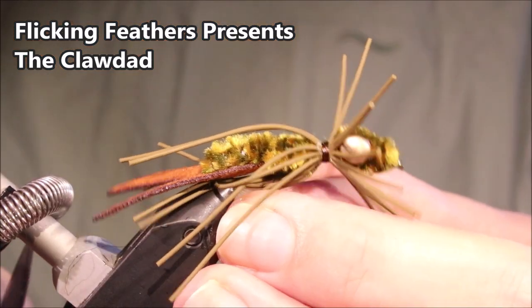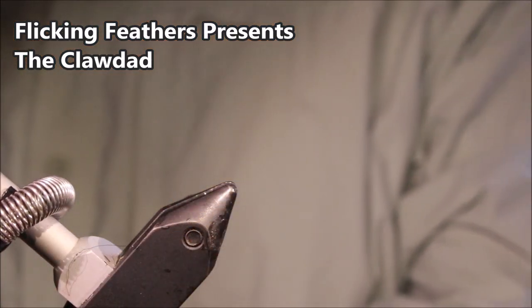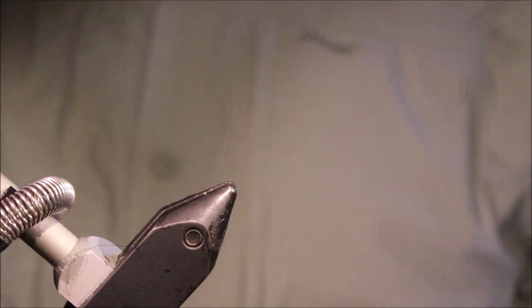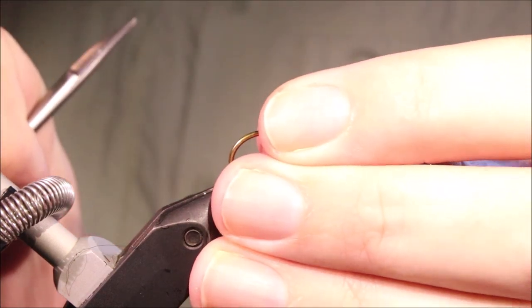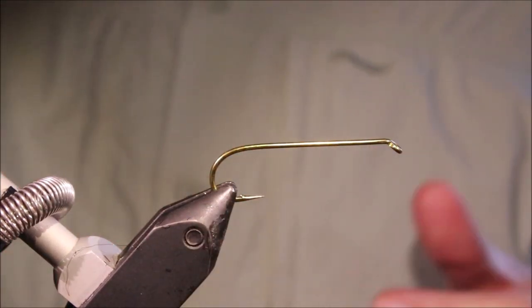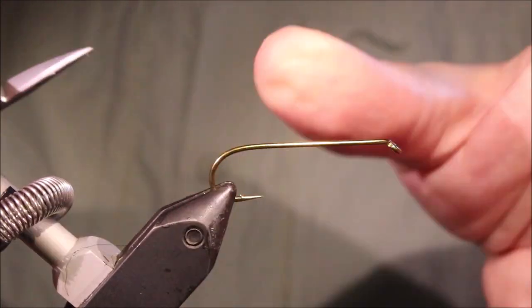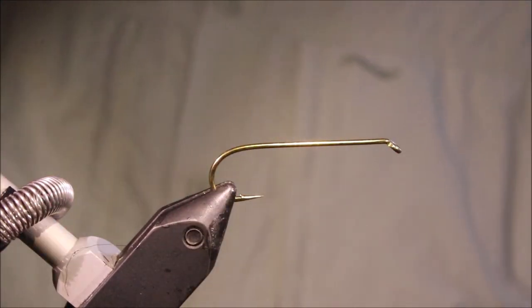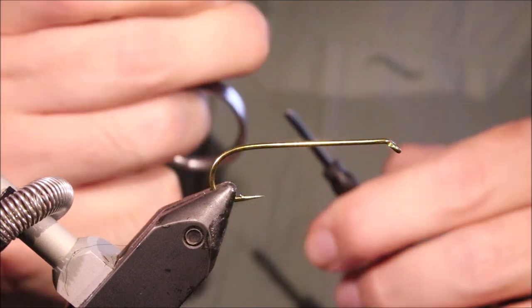Hi everybody, Martin at Flick and Feathers again today. A kind of claw dad, it's one of Chuck Crafts bass flies, excellent for smallmouth and largemouth bass and I'm sure it works for other species that eat a crayfish.